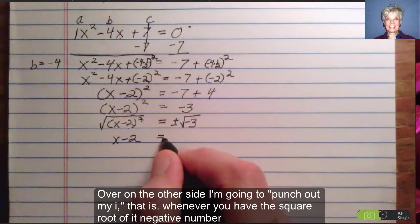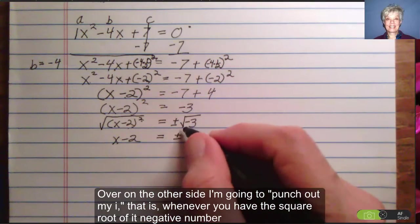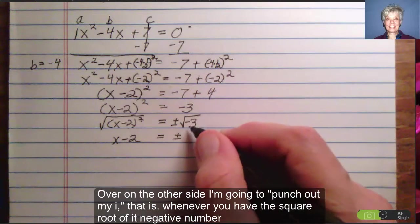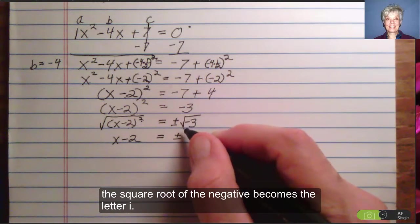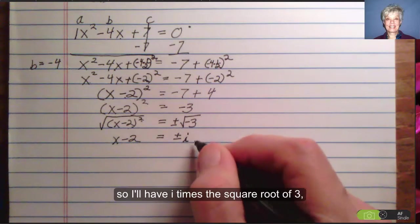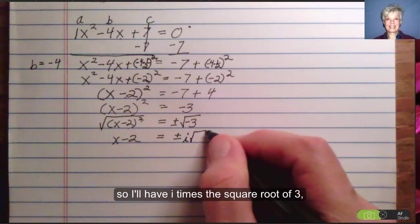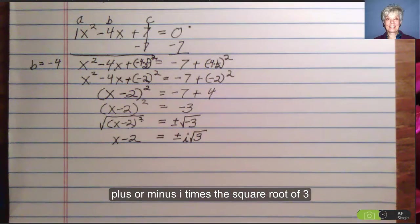Over on the other side, I'm going to punch out my i. That is, whenever you have the square root of a negative number, the square root of the negative becomes the letter i. So I'll have i times the square root of 3, plus or minus i times the square root of 3.